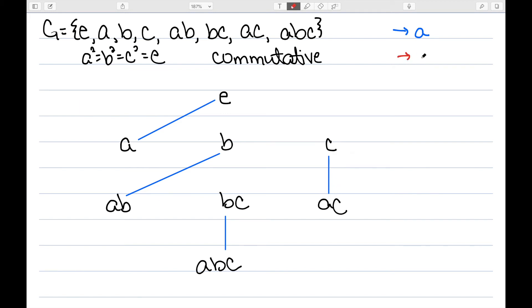I'll now use red for B. E times B is B. And B times B is E. A times B is AB. AB times B is A. C times B is BC. And BC times B is C. And now everything has a red line, so we're done with B.